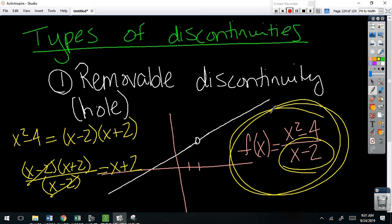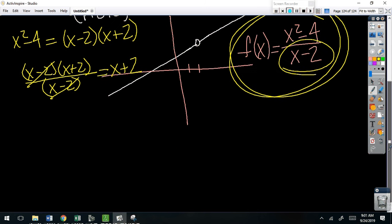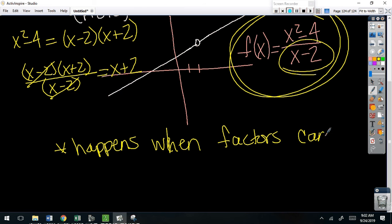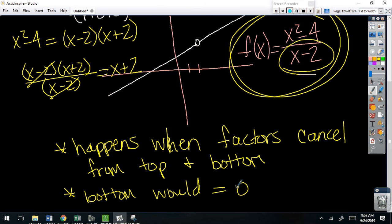So when you have a factor that cancels top and bottom, you have to leave that hole in your graph. And that's what we call a removable discontinuity. Let me make you a note here. This only happens when factors cancel from top and bottom, and it's where the bottom would equal 0. It makes a hole in the line.